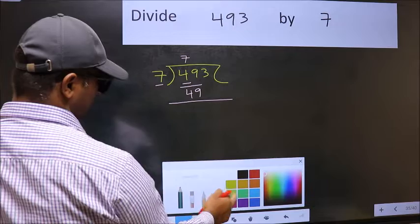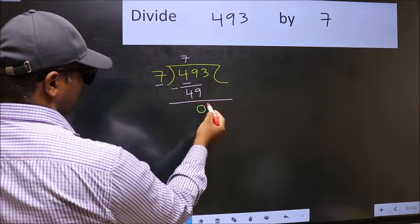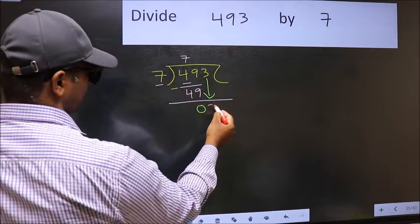Now we should subtract. 49 minus 49 is 0. After this, bring down the beside number, so 3 down.